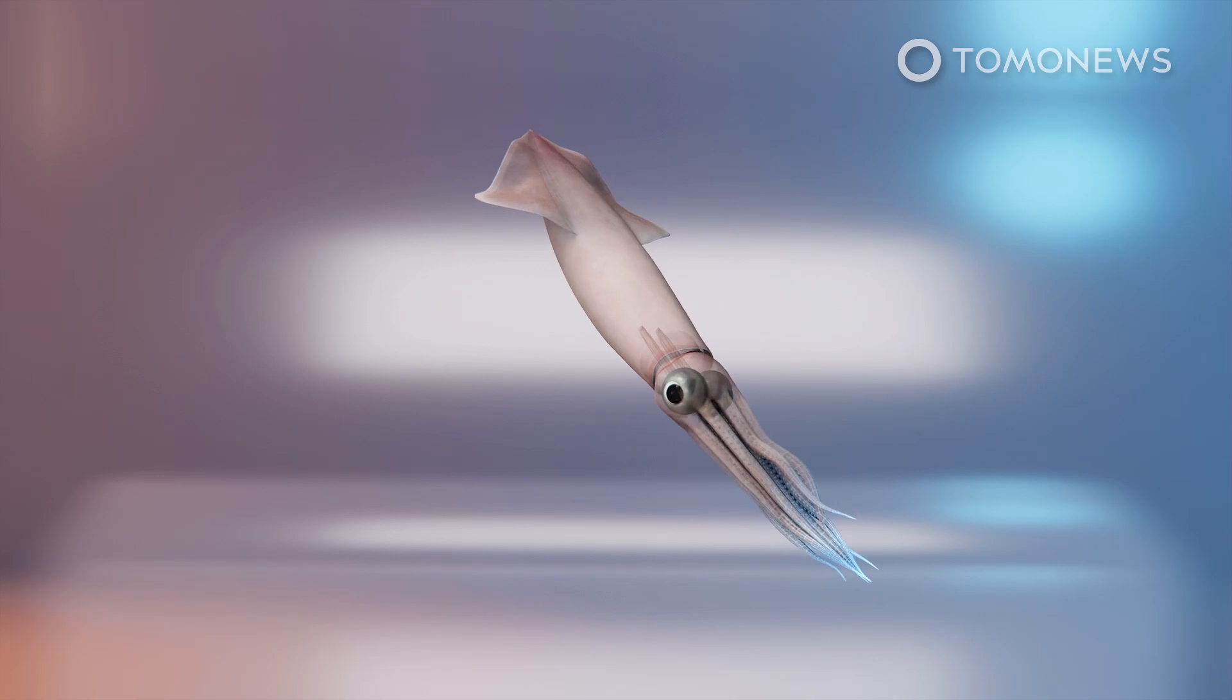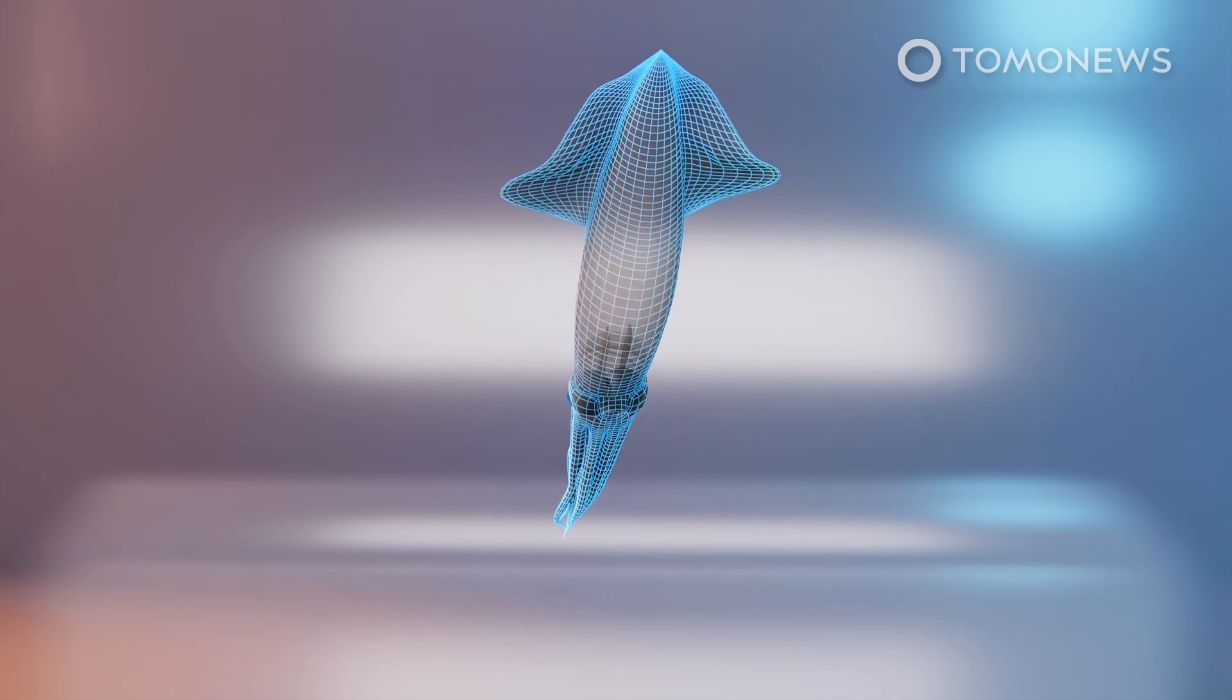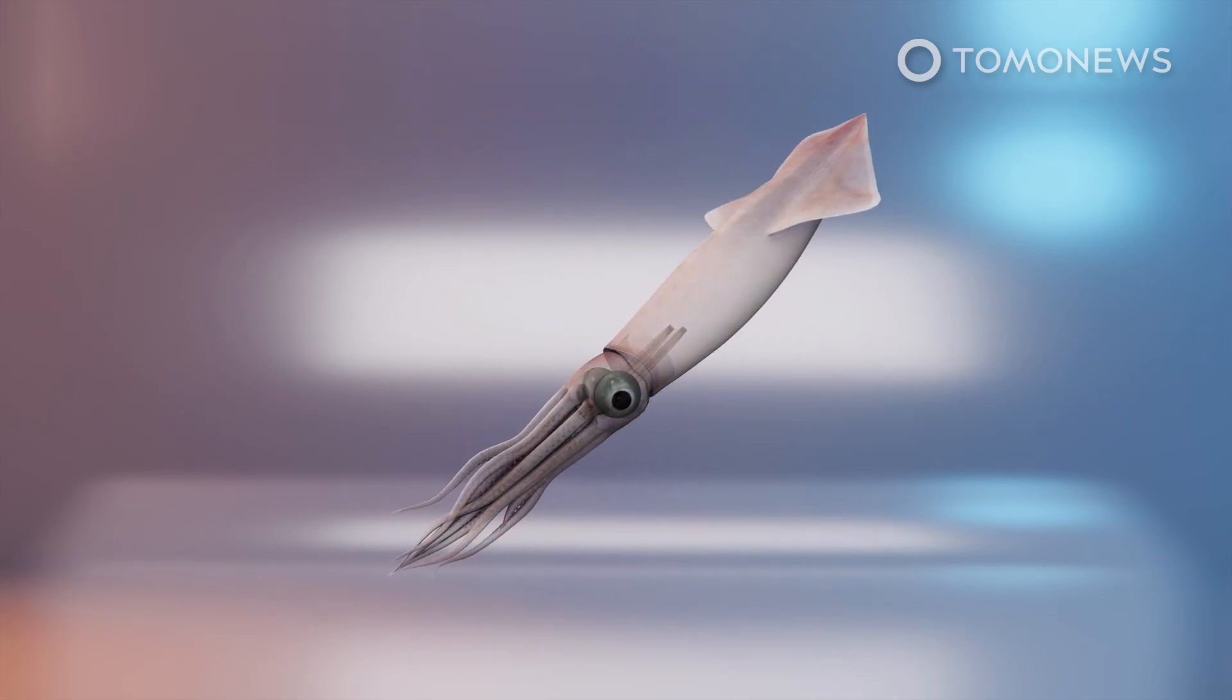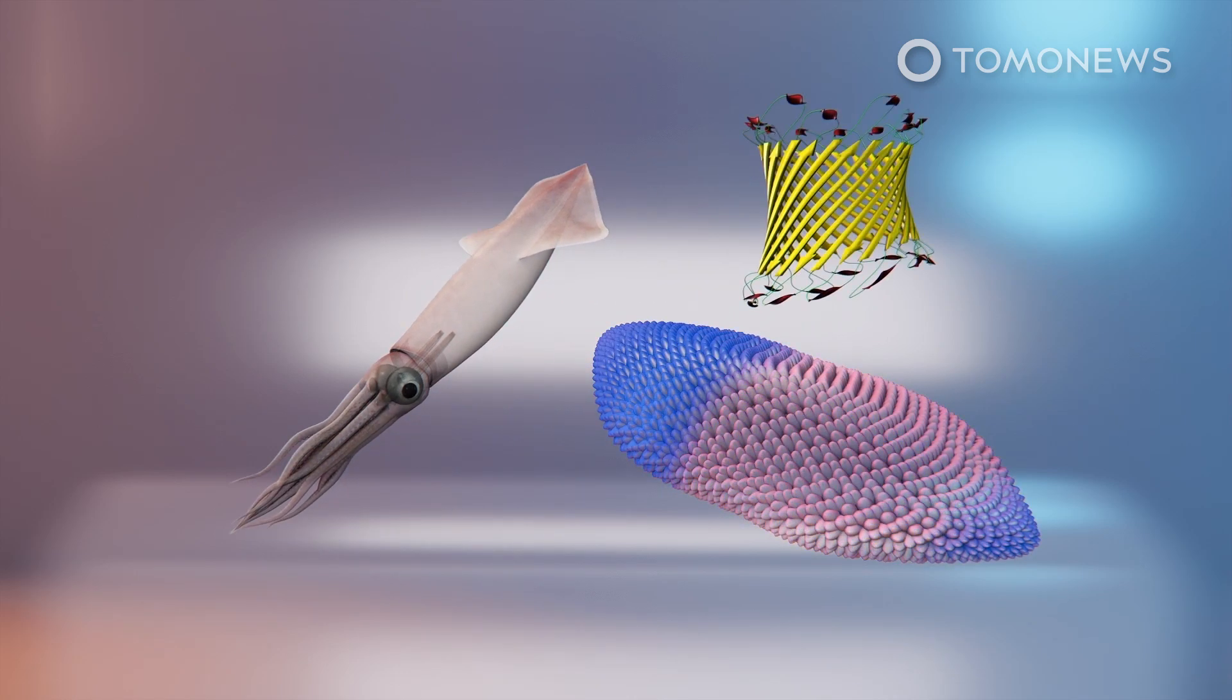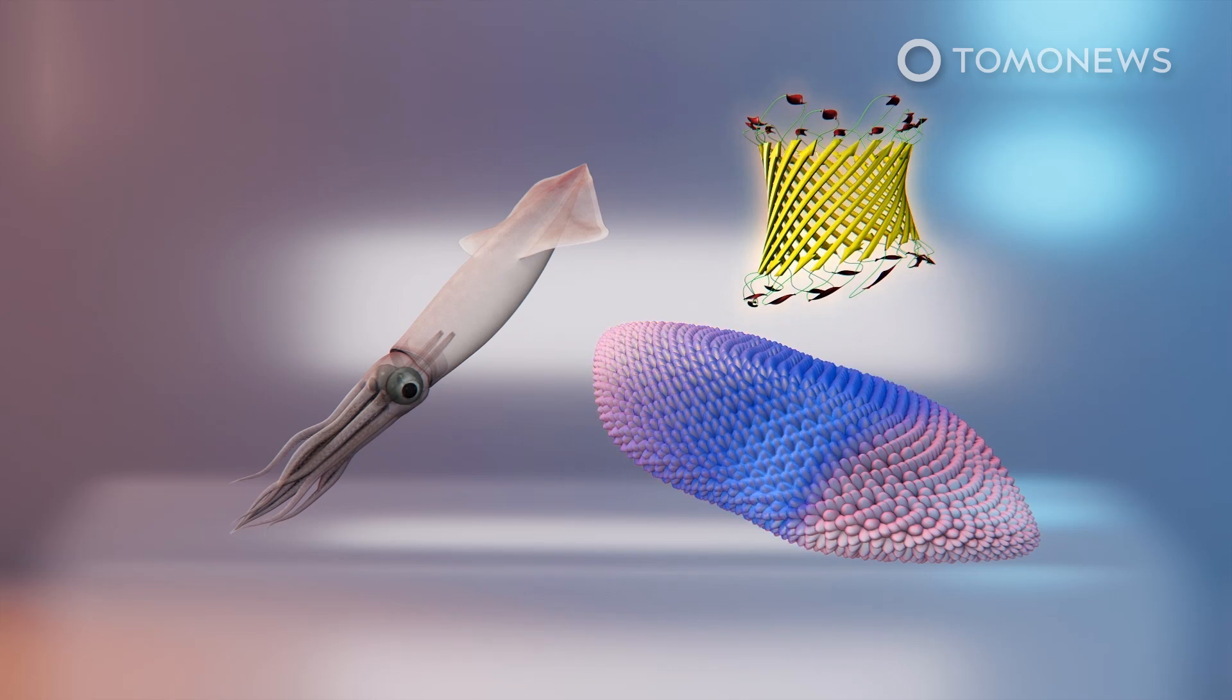According to the study in Nature Communications, squids and octopuses can cloak because their skin contains leukophore cells, which includes protein molecules called reflectins. This substance scatters light and creates an iridescent camouflage.